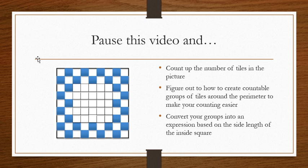In the end you want some kind of an expression based on the side length of this inside square, so on this five by five square, so that all you need to do is just plug in your side length of this square and figure out exactly how many tiles you need to order.